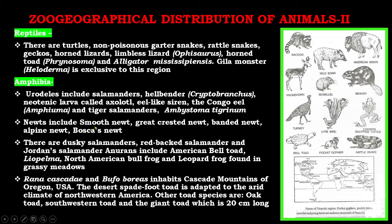Newts include smooth newt, great crested newt, banded newt, alpine newt, and brook newt. There are dusky salamanders, red-backed salamanders, and Jordan's salamander. Anurans include the American bell toad Leiopelma, North American bullfrog, and leopard frog found in grassy meadows. Rana cascadae and Bufo boreas inhabit the Cascade Mountains of Oregon, USA. The desert spadefoot toad is adapted to the arid climate of northwestern America. Other toad species include the oak toad, southwestern toad, and the giant toad, which is 20 centimeters long.